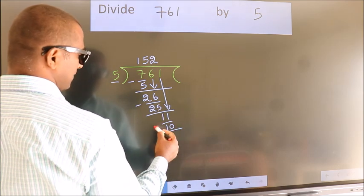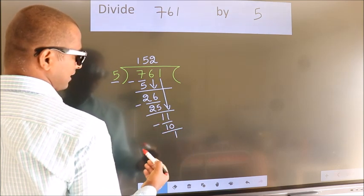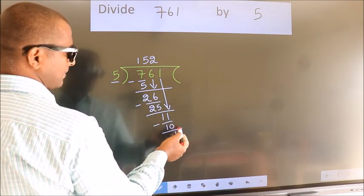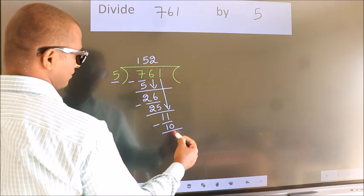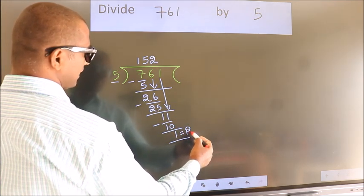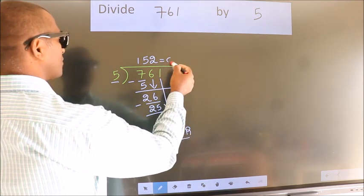Now we subtract. We get 1. No more numbers to bring down, so we stop here. This is our remainder. This is our quotient.